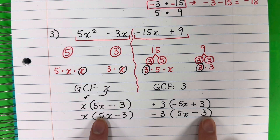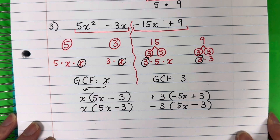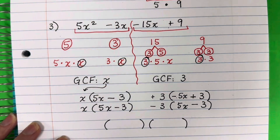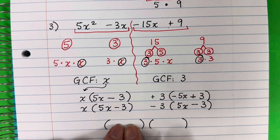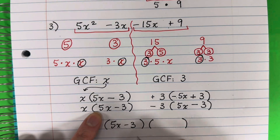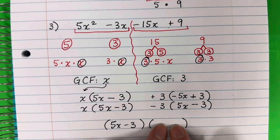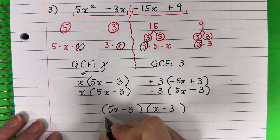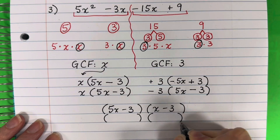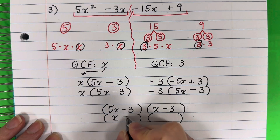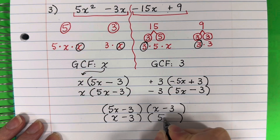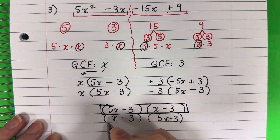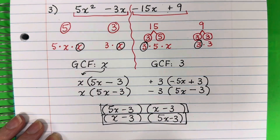So for my final answer, I'm going to open two parentheses. I put what is the same in the first: 5x minus 3. And I put what is different in the second: x minus 3. So the answer is (5x minus 3)(x minus 3). Note that the order of the factors may vary on a multiple choice answer.